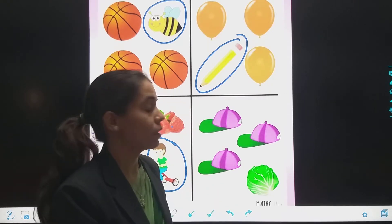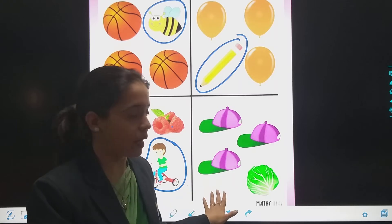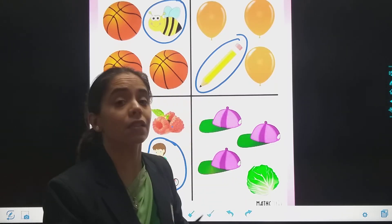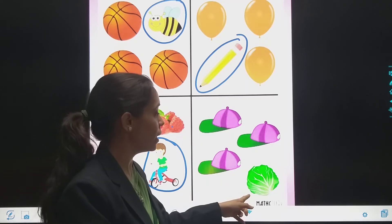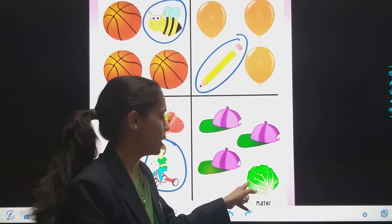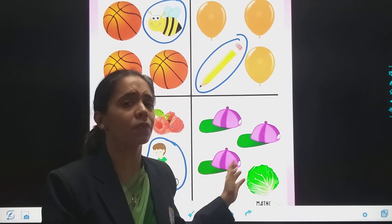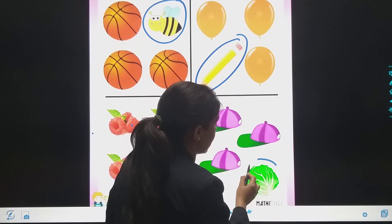Then here are some caps. One, two, three. Three caps. Aur yeh? This is cabbage. Yes? Vegetable hai. Same toh nahi hai na. Yeh bhi cap hai. Yeh bhi cap hai. Aur yeh bhi cap hai. But yeh toh kya hai. This is something different. Odd hai. Yes? So you have to circle this.